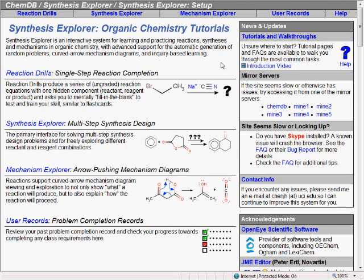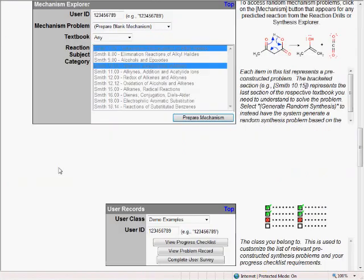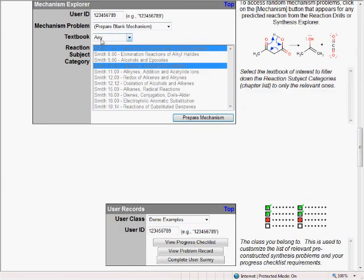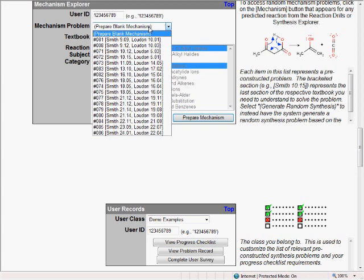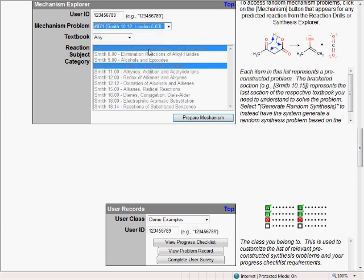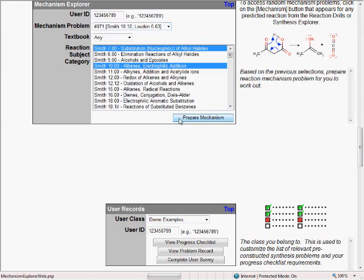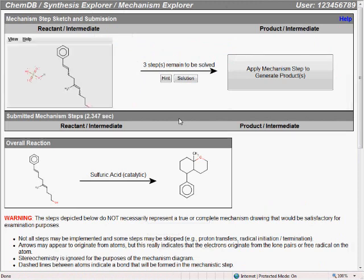Which can be accessed by going to the Mechanism Explorer section of the setup screen and selecting a problem from this list. These problems are, again, much harder than the standard reaction mechanisms you'll encounter, but this also makes them much better practice for the challenging mechanism problems that instructors like to give on exams.